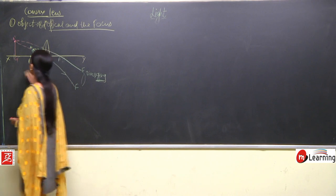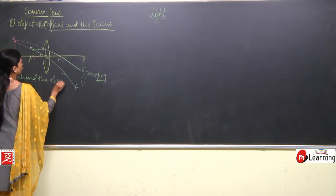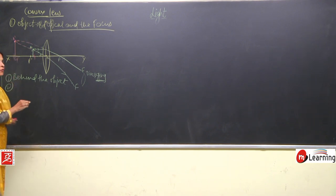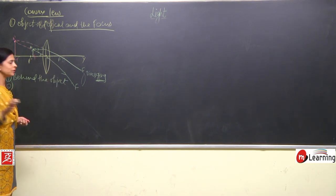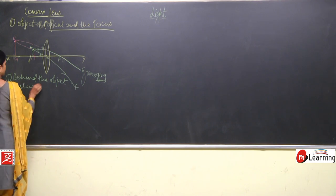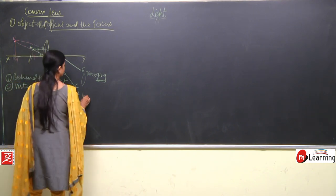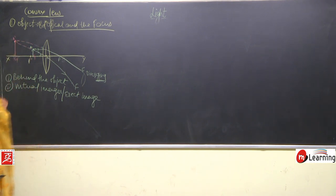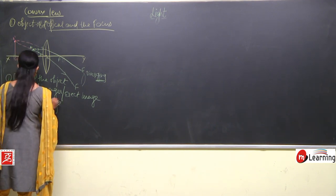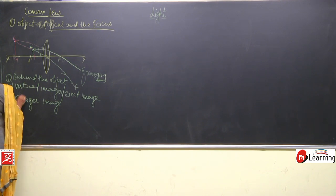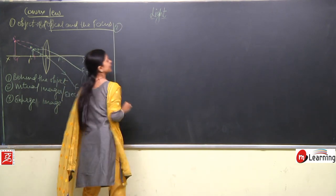This image is behind the object, on the same side as the object. Since the rays are not actually intersecting, the image is virtual. Virtual images are always erect. We can also see that the image is larger than the object — an enlarged, virtual, and erect image is formed when the object is placed between the optical center and the focus of a convex lens.